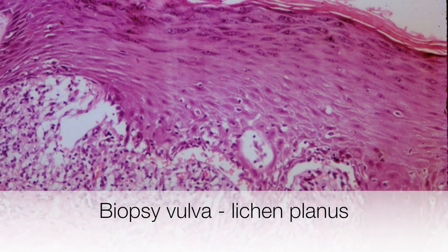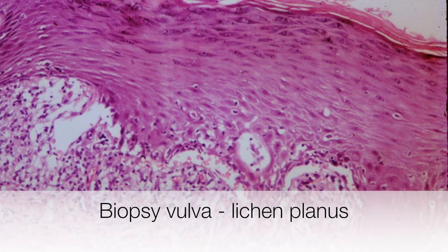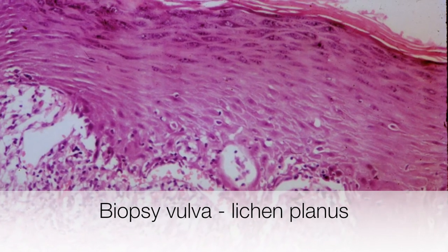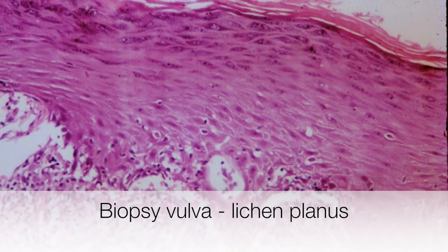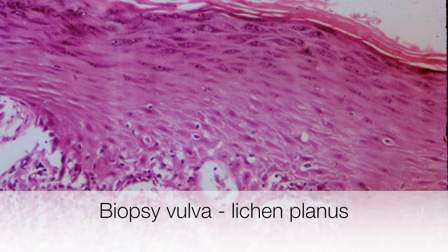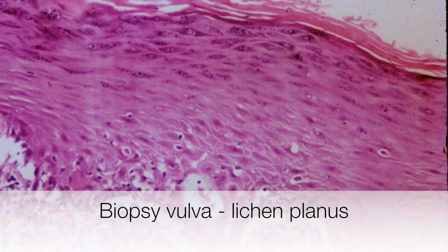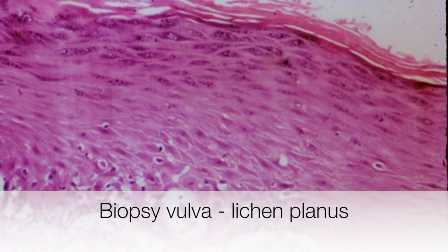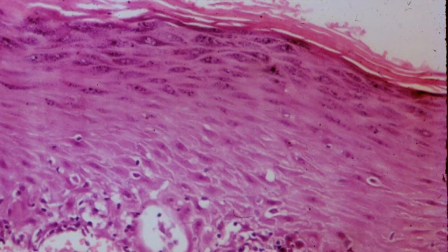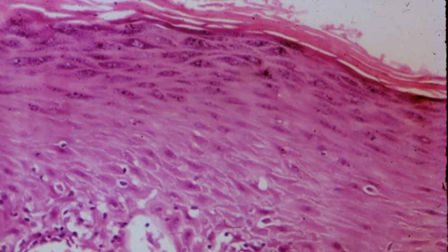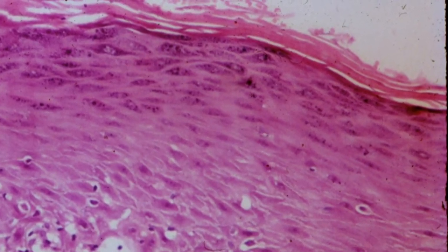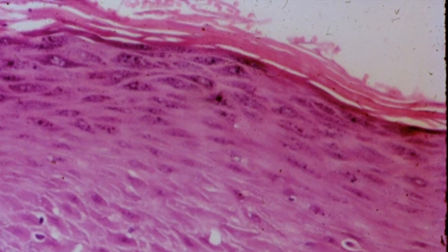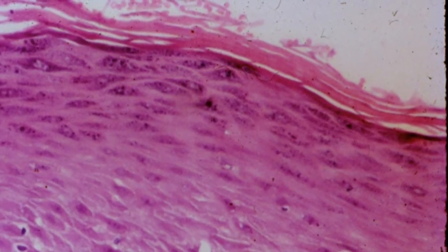This is a biopsy from the vulva of a patient who had a patch of Leukoplakia. The underlying pathology is lichen planus, and the reason why the patch was white is the layer of hyperkeratosis that we are zooming into at the top of the picture.